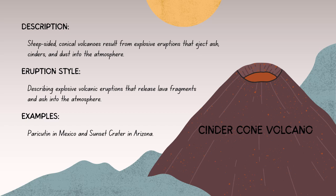Another type is the cinder cone volcano — typically small in size with a steep conical shape. These volcanoes are built from the accumulation of volcanic debris such as ash, cinders, and volcanic rocks ejected during explosive eruptions. They are associated with explosive eruptions where gas-rich magma is fragmented into small particles, creating pyroclastic flows and depositing ash and cinders around the vent.